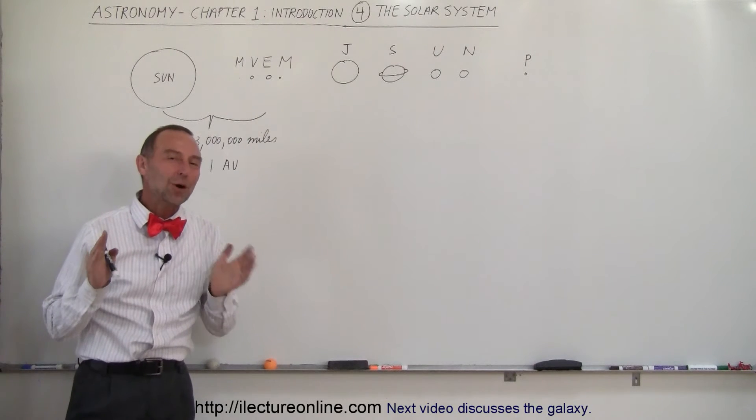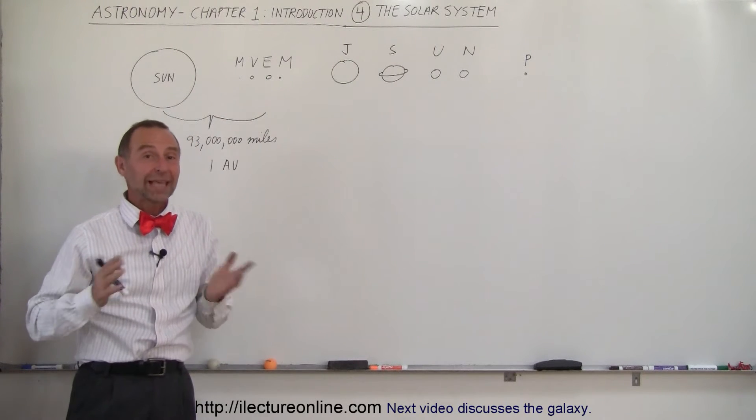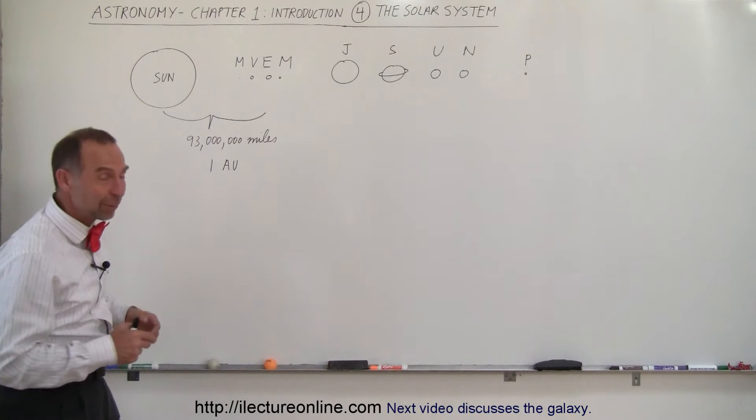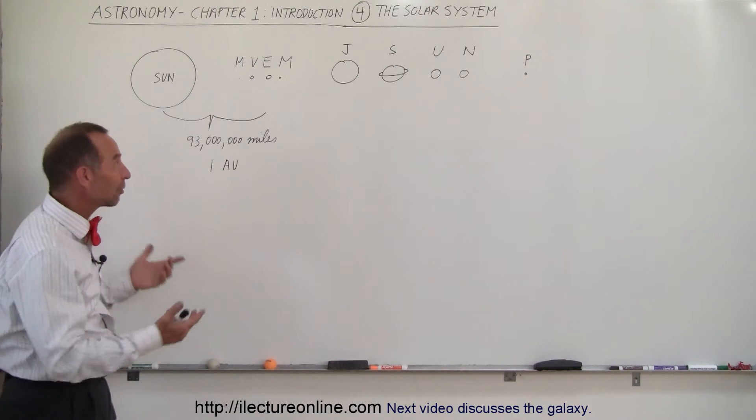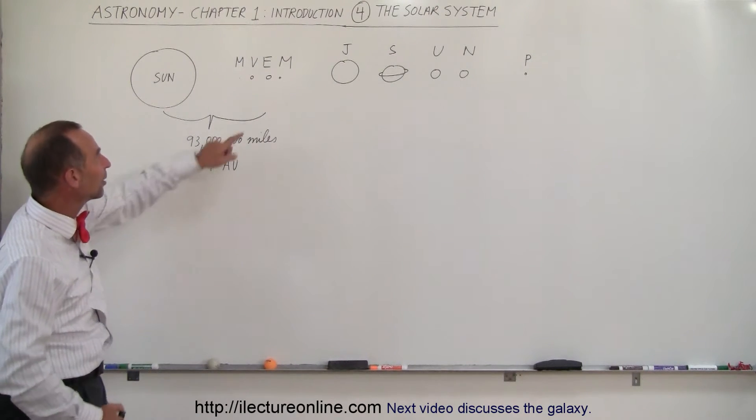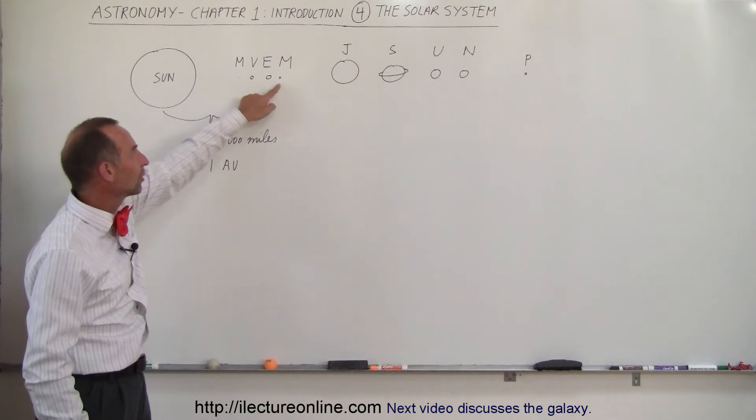Welcome to LectureOnline. Now that we know what matter is and where it came from, let's take a look and see what that matter formed. We have our solar system here that we live in. We live on the Earth. We have Mercury, Venus, Earth, and Mars.